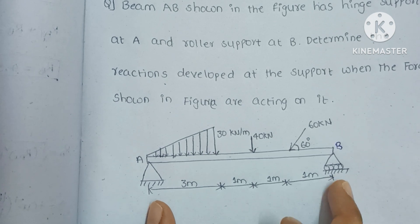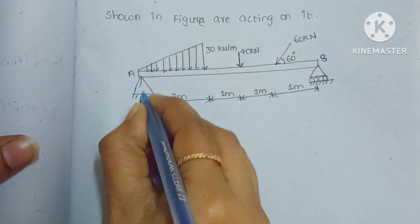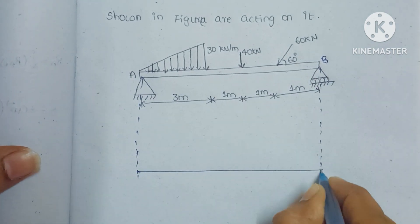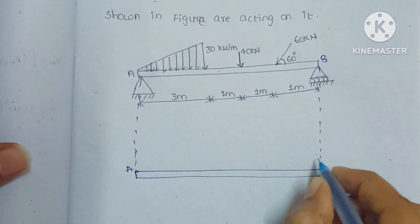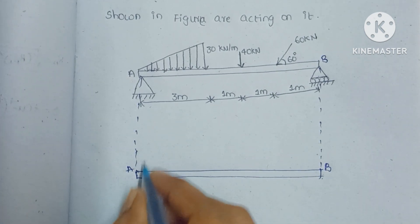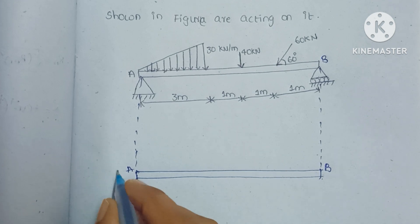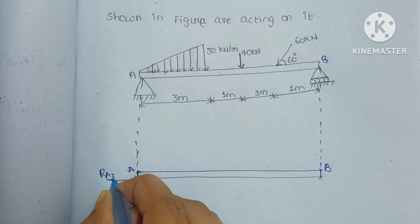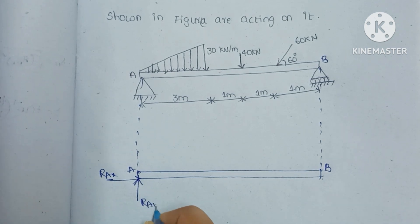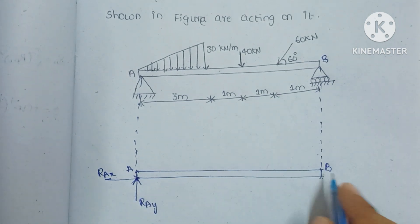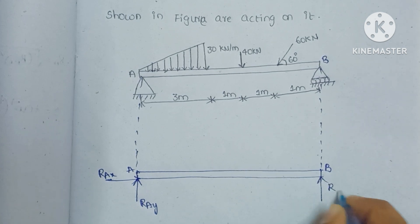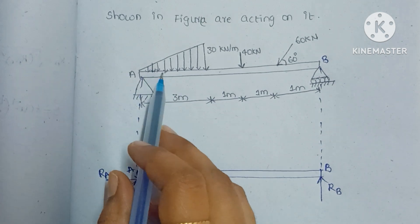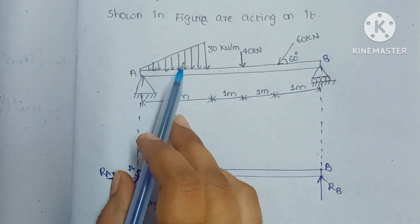To find the reactions at these supports, first we have to draw the free body diagram. For the hinge support at A, there are two reaction forces: one in the x-direction R_Ax, and another reaction force at A in the y-direction R_Ay. For the roller support, we have only one reaction force in the vertical direction, that is R_B.